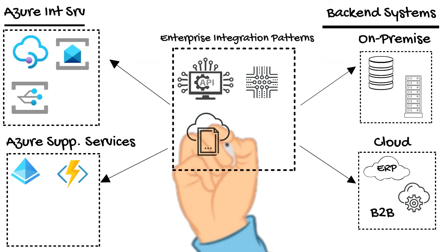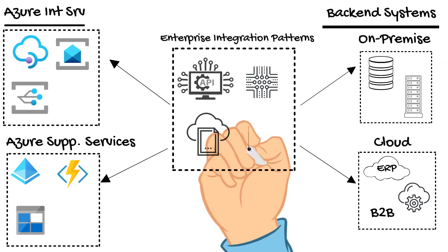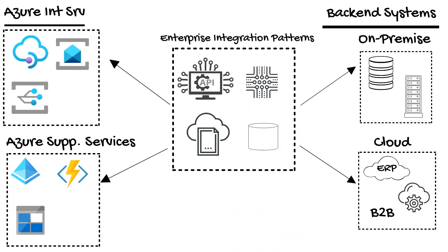The file transfer integration pattern can be considered the granddaddy of the group and has been serving us well for decades. When dealing with on-premise legacy applications that are difficult to change, you will undoubtedly need to leverage this pattern in your solution. Microsoft offers Azure Blob Storage as the technology to host your files and share it with consuming applications to download. The final pattern that rounds out the four is shared database — there will undoubtedly be an on-premise database that multiple legacy applications rely on to get their data, and you will be tasked with updating data directly into the database.